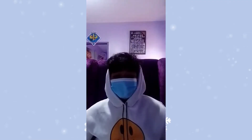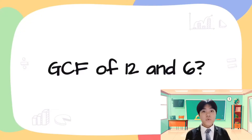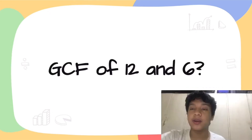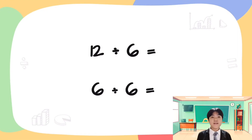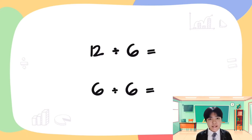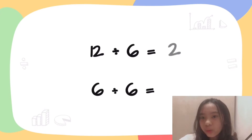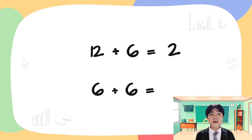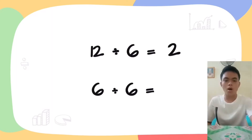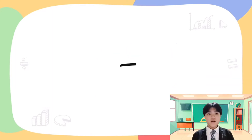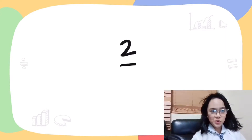Yes, I think we can simplify it. Rhyme, can you tell me the greatest common factor of 12 and 6? The greatest common factor of 12 and 6 is 6. Correct. Now, we will divide both the numerator and denominator by 6. Mikayla, what is 12 divided by 6? It is 2. What about 6 divided by 6, Leandro? 1. So, what is the final simplified form of it? It is 2 over 1.